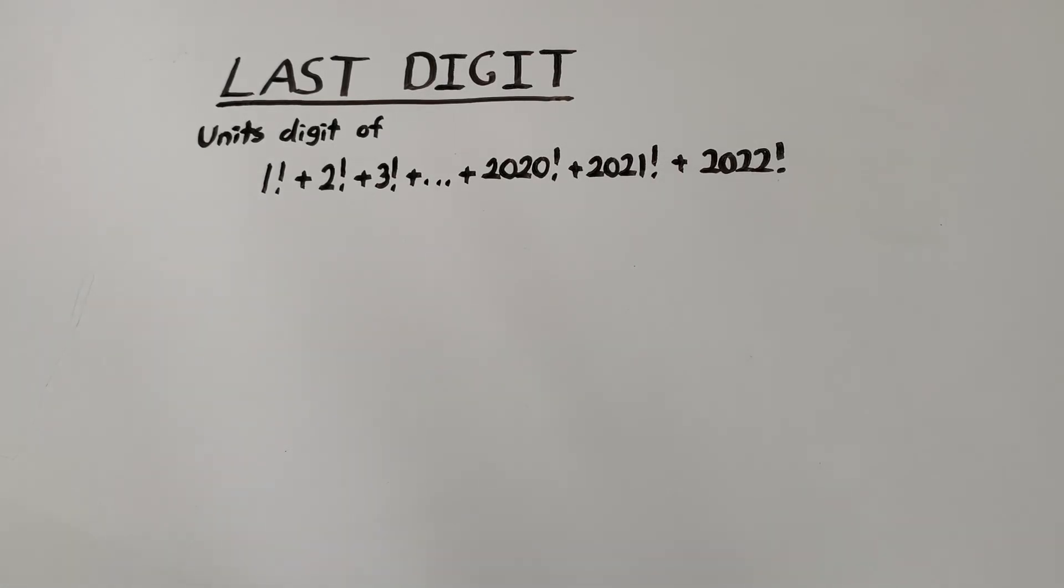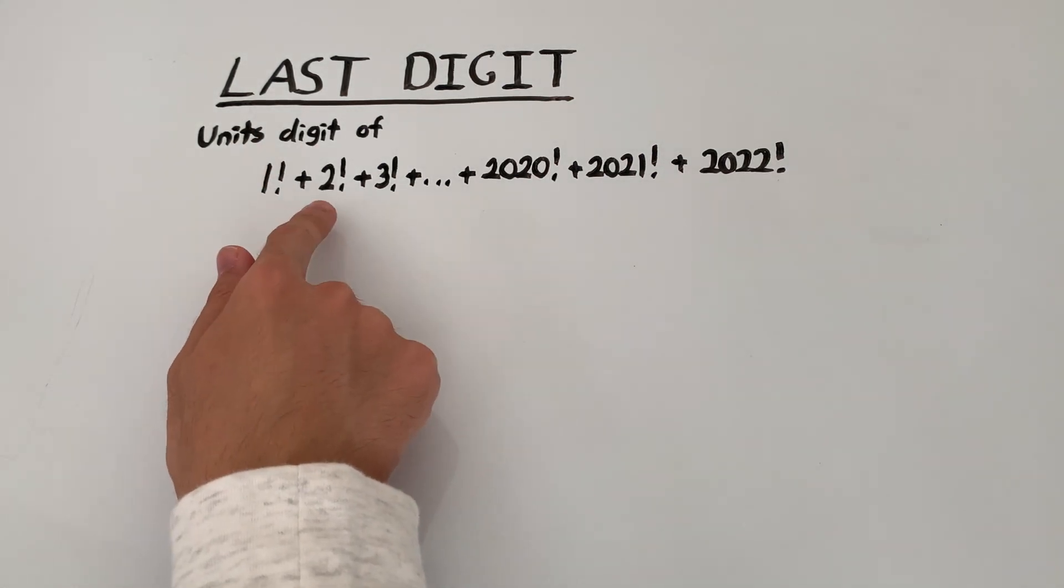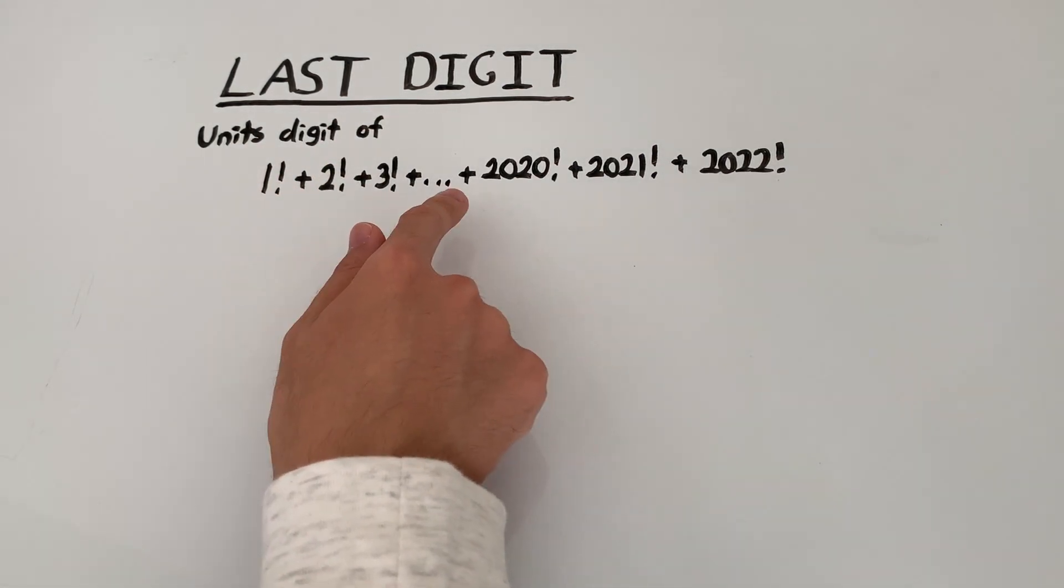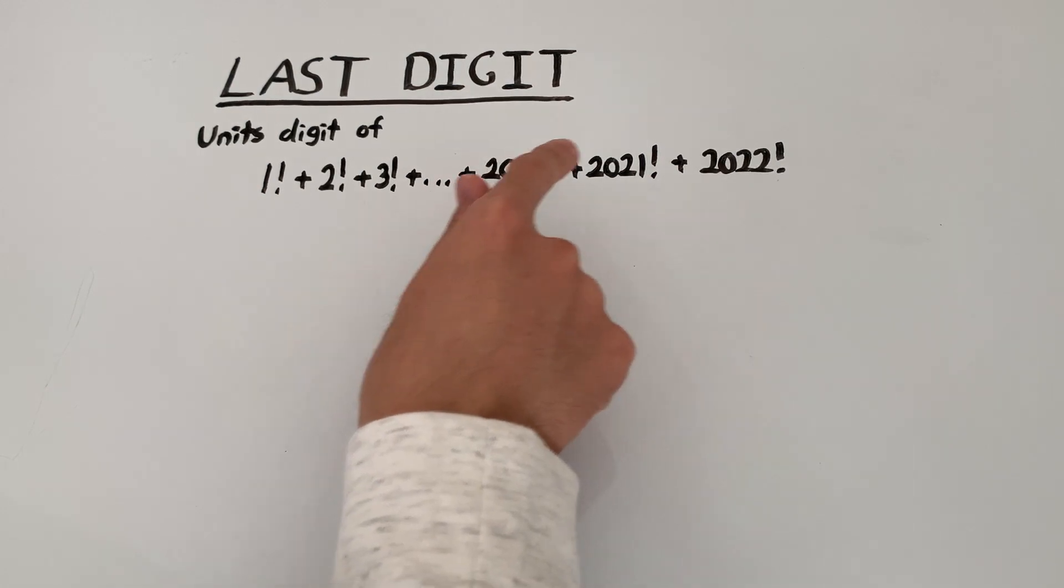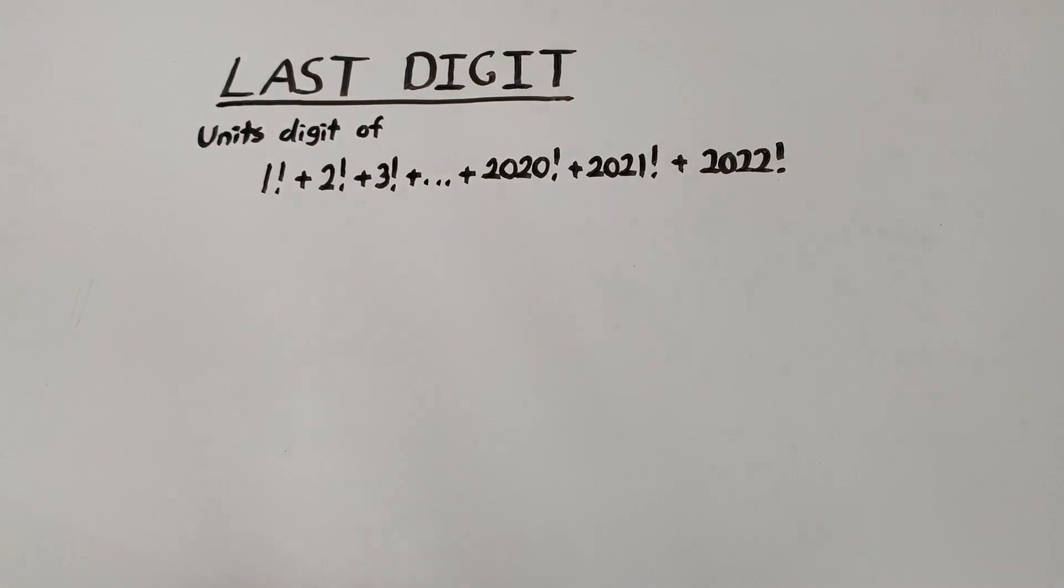Today, we need to find the units digit of 1 factorial plus 2 factorial plus 3 factorial all the way to plus 2020 factorial plus 2021 factorial plus 2022 factorial.